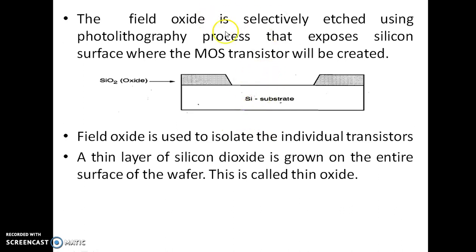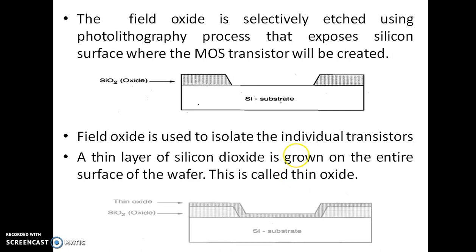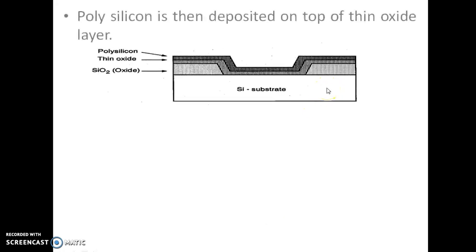A thin layer of silicon dioxide is grown on the entire surface of the wafer; this is called the thin oxide. After that, a thin oxide layer is created, on top of which a polysilicon layer is deposited. This is the thin oxide layer on which the polysilicon layer is deposited.